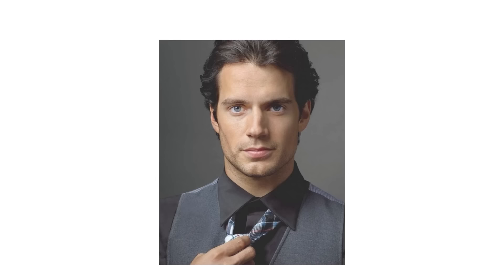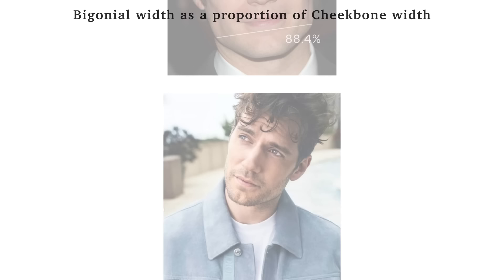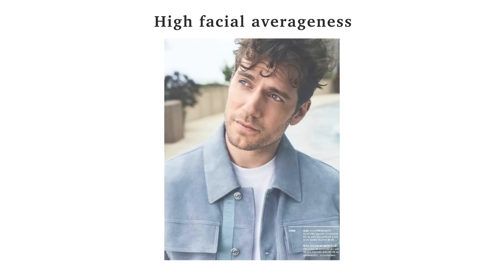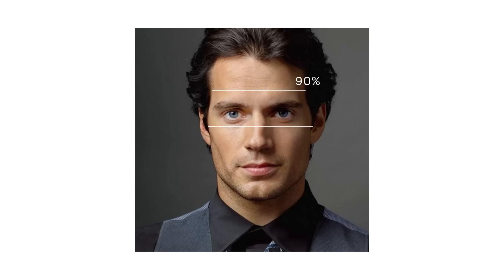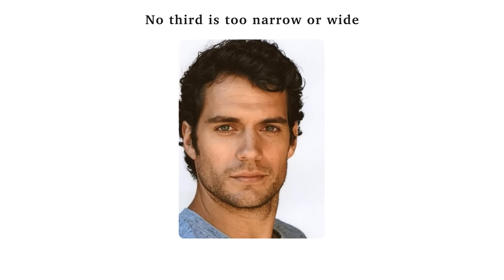Henry's midface is itself a perfect 1 to 1 square, meaning it doesn't look overly squished or long, and that's generally attractive. His bigonial width, or jaw width, is slightly less than his cheekbone width and is not overly wide or narrow, approaching the idea of facial averageness. His bi-temporal width or forehead width is about 90% of his cheekbone width, giving that 90-100-90 look that produces a harmonised and masculinised facial contour, where no third of the face seems too notably narrow or wide.